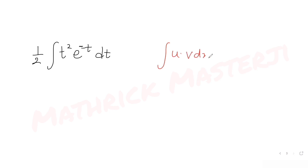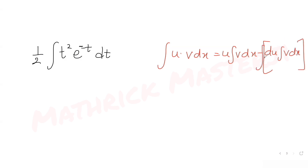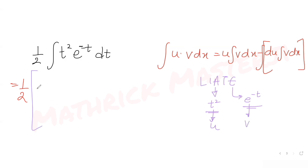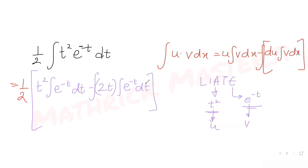Using the product rule of integration — integral of u times v dx equals u times integral v dx minus the integral of (derivative of u times integral of v dx) — I apply the ILATE rule. Here t square is the algebraic function (u) and e raised to minus t is the exponential function (v). This gives: t square times the integral of e raised to minus t dt, minus the integral of (derivative of t square, which is 2t, times the integral of e raised to minus t dt).